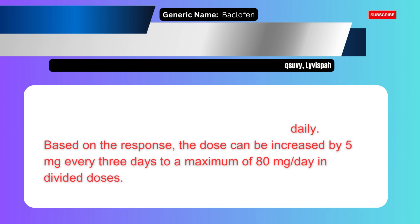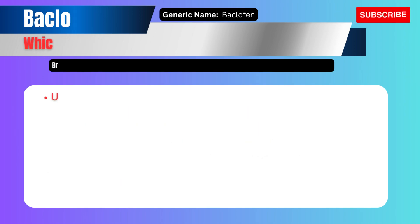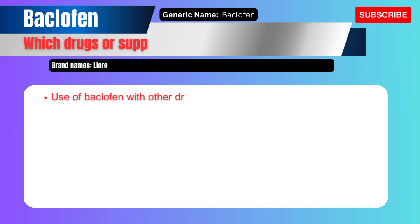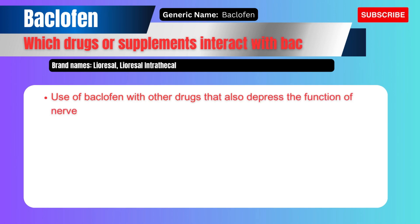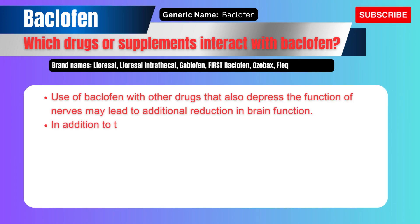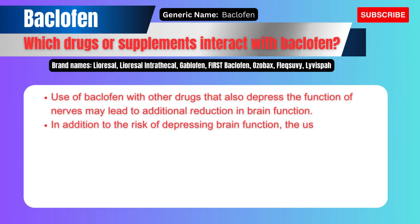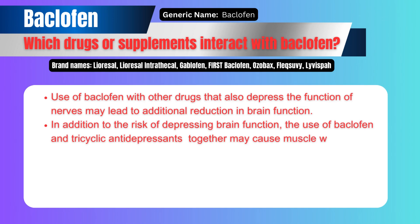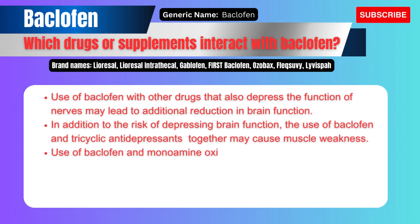Which drugs or supplements interact with baclofen? Use of baclofen with other drugs that also depress the function of nerves may lead to additional reduction in brain function. In addition to the risk of depressing brain function, the use of baclofen and tricyclic antidepressants — for example, amitriptyline, doxepin, sinequan, or adapin — together may cause muscle weakness.